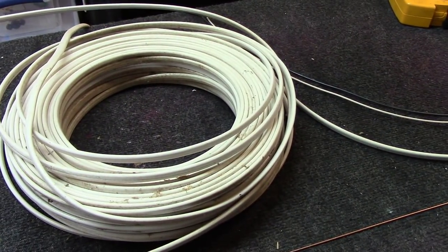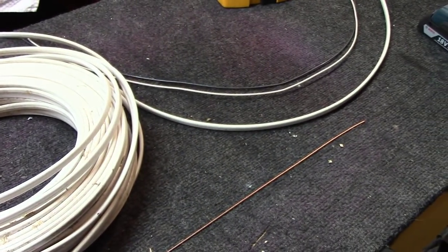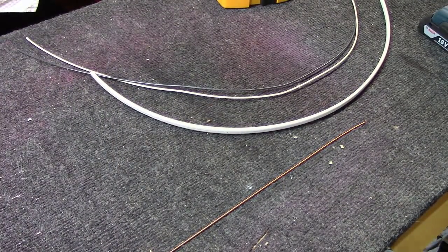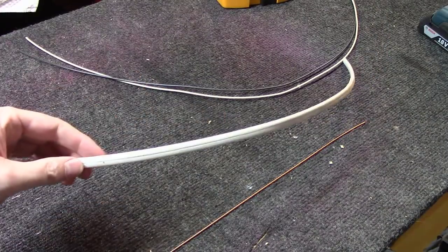But did you notice this stuff kind of comes coiled up? So even when you kind of get it out of the way and cut off a piece, you still got this which is nice and curved.